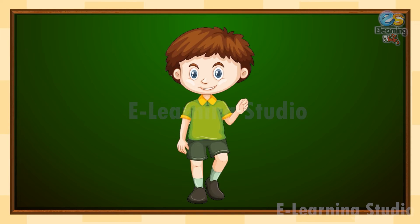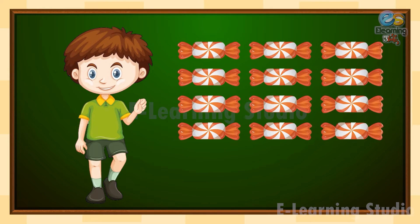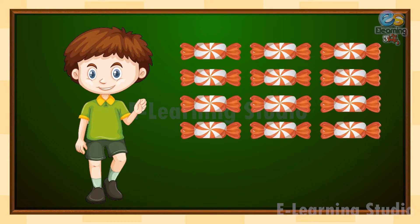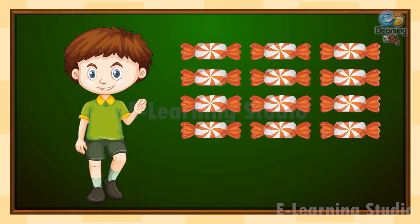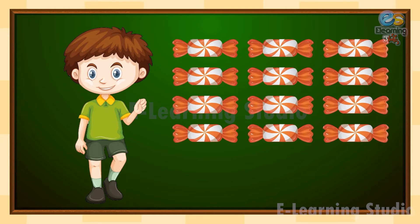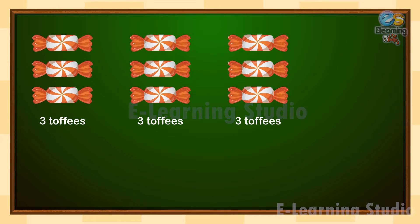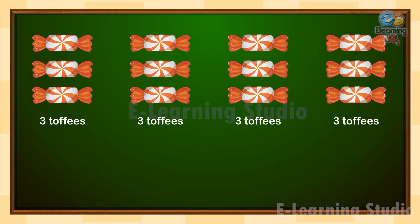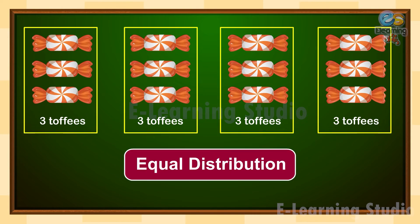Here is a boy Arush. He has 12 toffees and he wants to distribute them equally among 4 of his friends. He distributes the toffees equally, and each friend gets 3 toffees. This is called equal distribution.